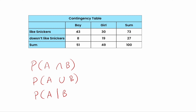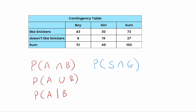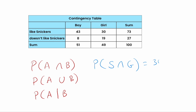A question asking for the intersection of two things might be: what's the probability of liking Snickers and being a girl? This is asking — if you select a random person, what's the probability they are both a girl and someone who likes Snickers? There are 30 people in our sample with both those characteristics, so the answer is 30 out of 100, or 0.3. The intersection is about having both characteristics simultaneously.